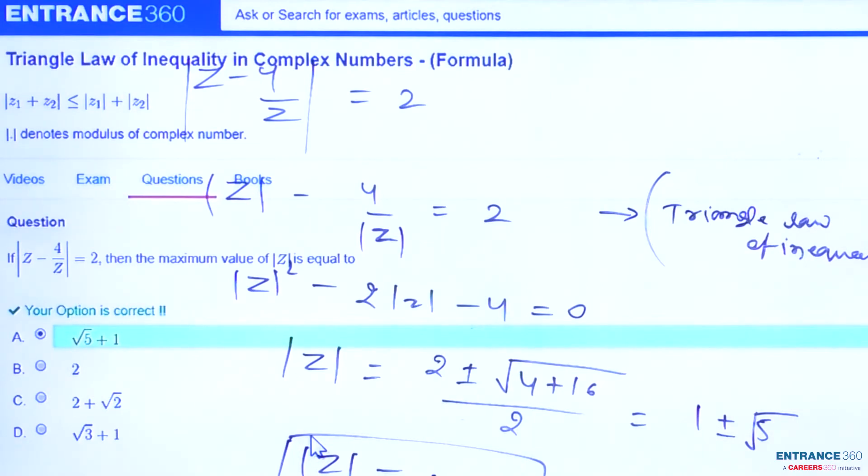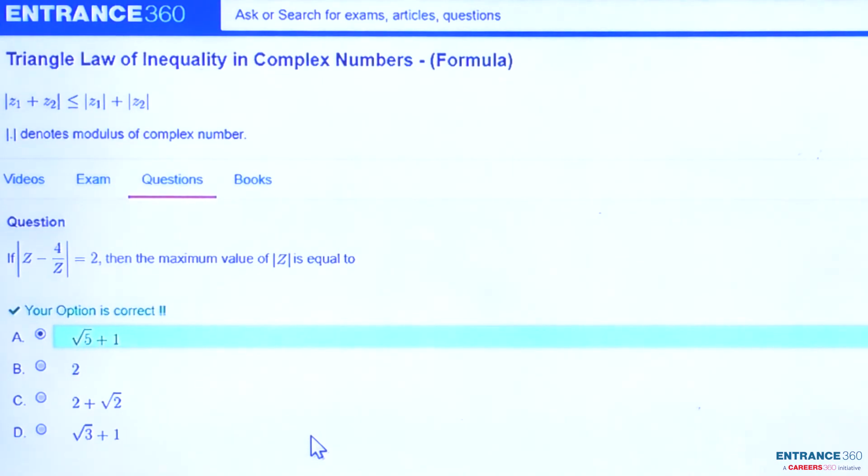Yes, root 5 plus 1 is the maximum value of mod z and this is a very easy question. We have to use only the triangle law of inequality to find the maximum value of mod z, and the answer should be root 5 plus 1.